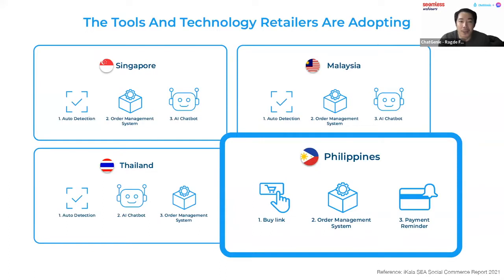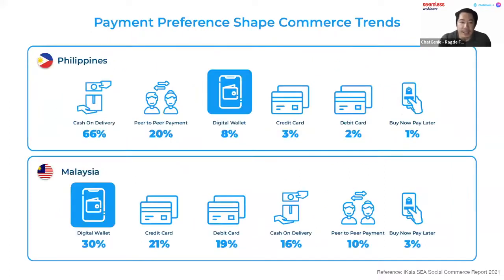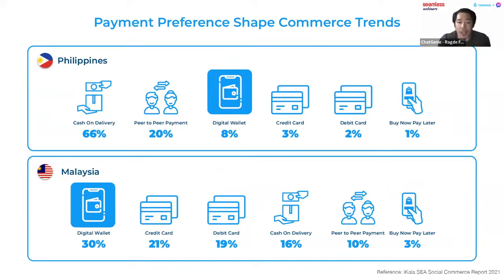While our neighboring countries prefer auto-detection and chatbots for social commerce, the Philippines mostly uses website links to push customers to check out. The ticket sizes bought online are affected by the payment methods used. Compared to Malaysia, mobile wallet adoption as a payment method in the Philippines is only at 8%, while Malaysia's is over 3x higher. Credit and debit card usage in the Philippines is at just 3% and 2% respectively.